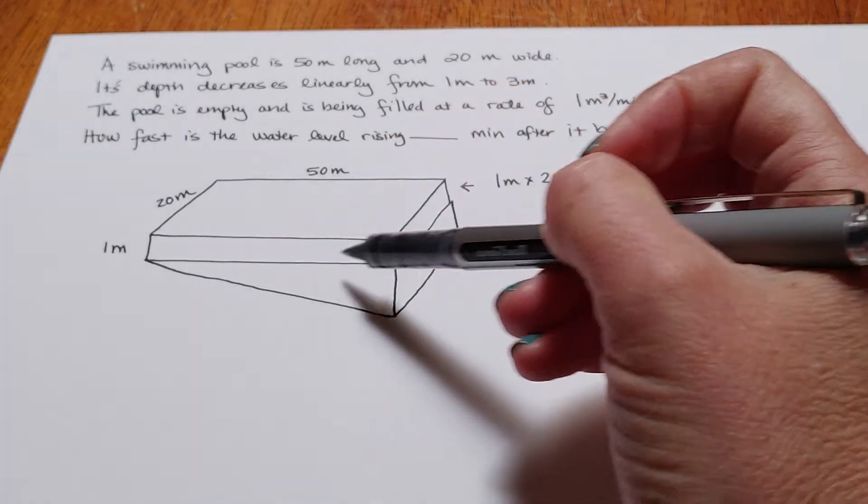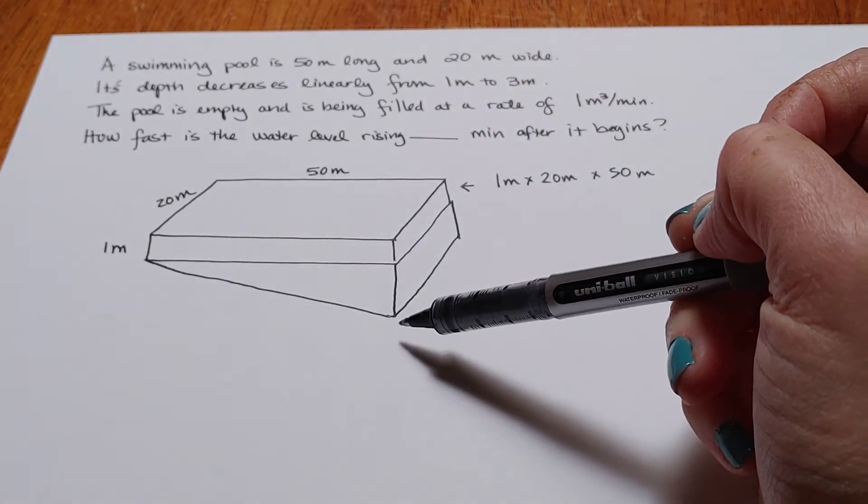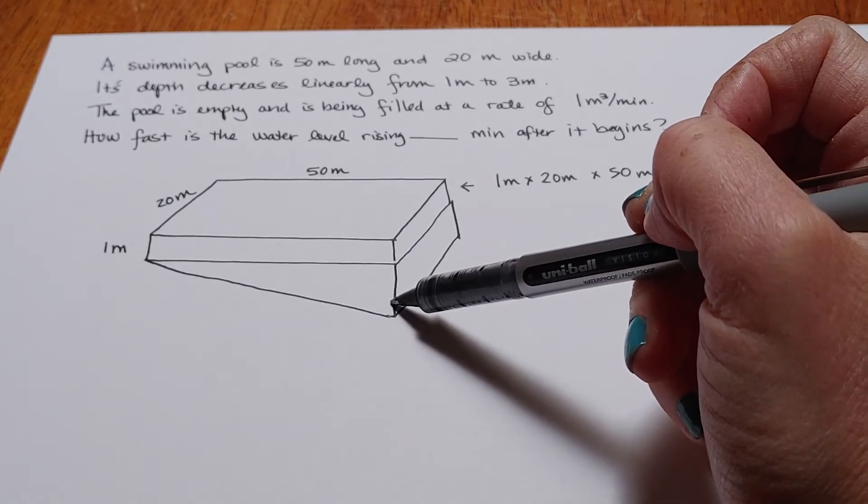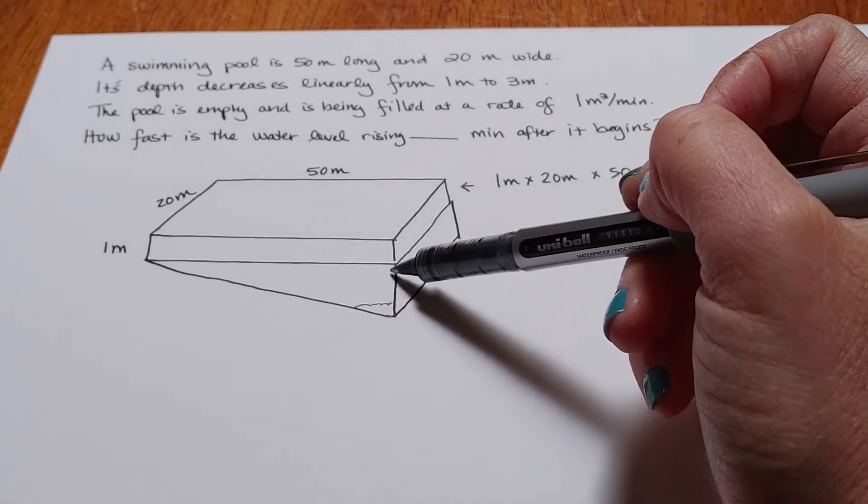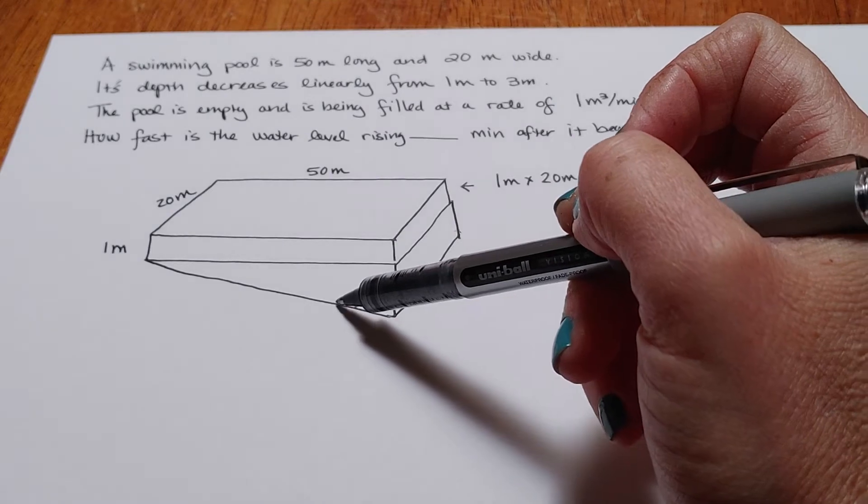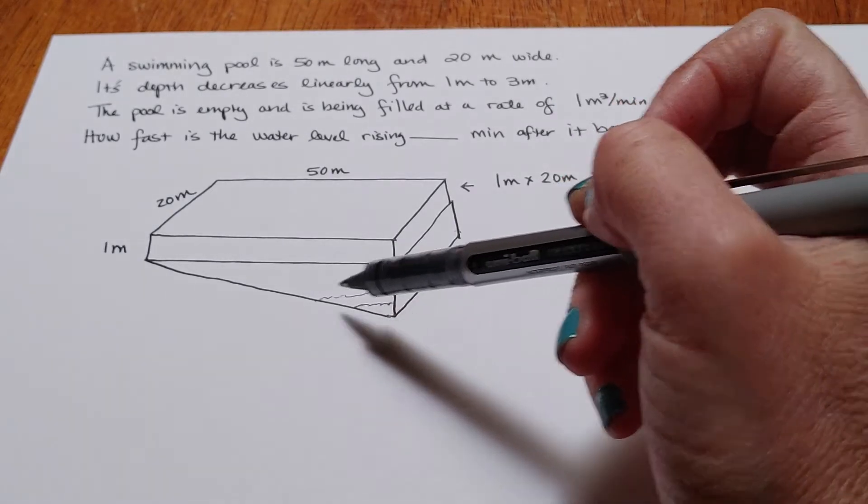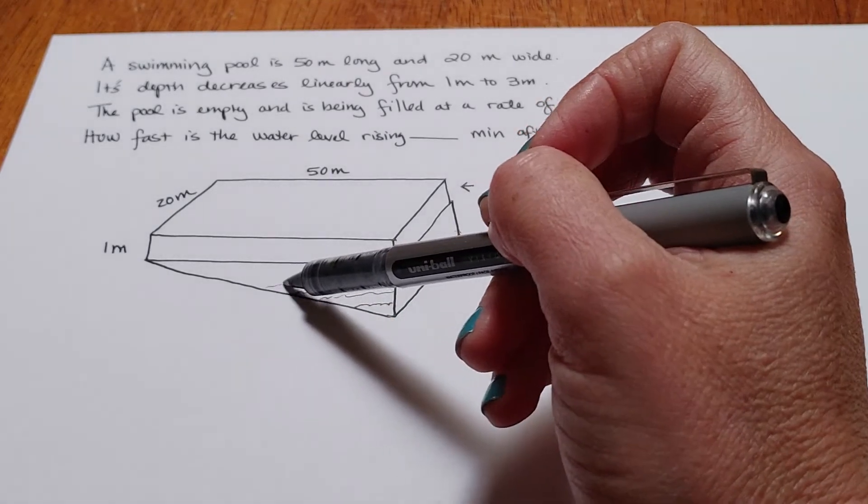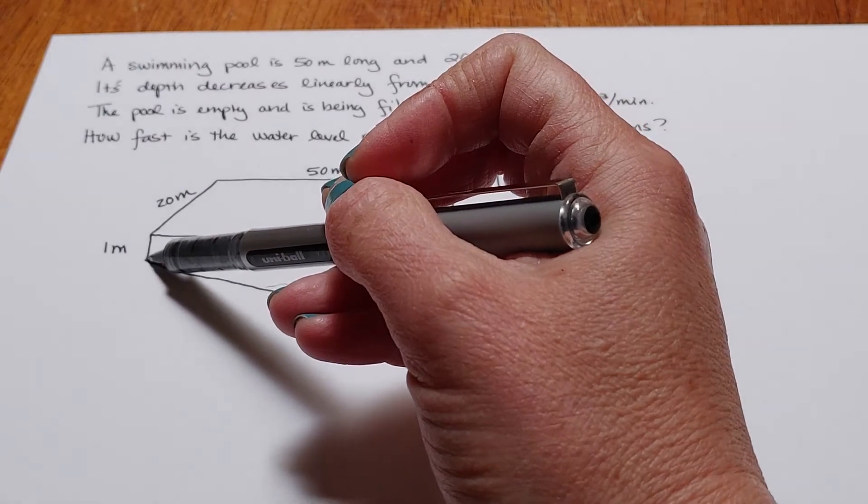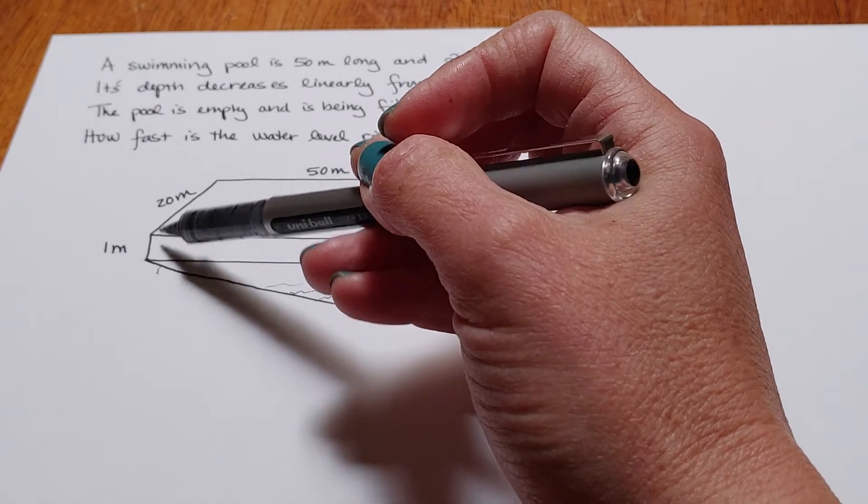This bottom wedge, imagine again that it's filling up with water. What we're going to see is kind of these small rectangular slices and as it gets deeper, it's going to become wider and wider and wider until I hit at this point and then it just rises as a box.